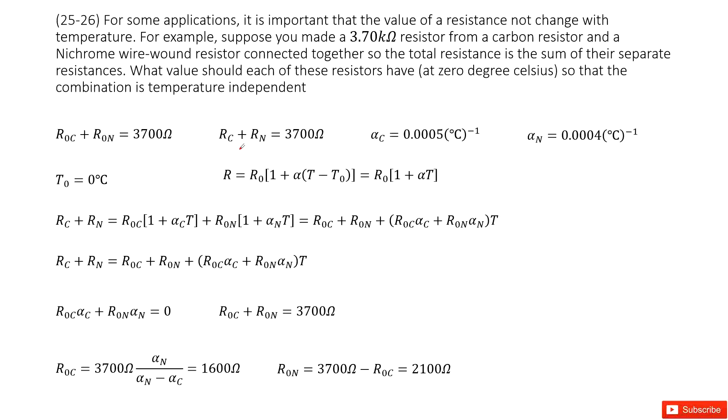So you can see, it tells us for some applications it's very important to make sure the resistance will not change with temperature. So how can we solve that? We can use the combination of carbon resistors and nickel resistors. So initially, the resistance for carbon plus the resistance for nickel equals 3700 ohms.